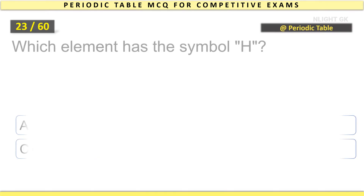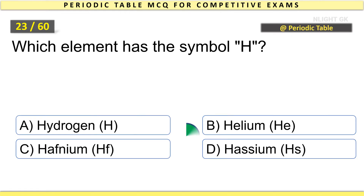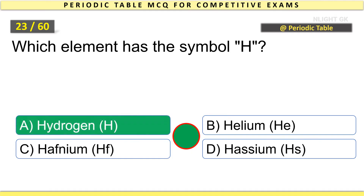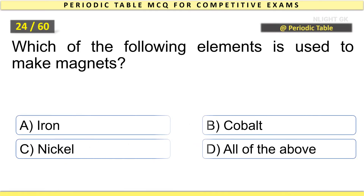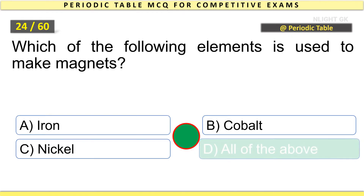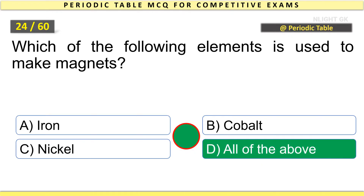Which element has the symbol H? Hydrogen. Which of the following elements is used to make magnets? All of the above.